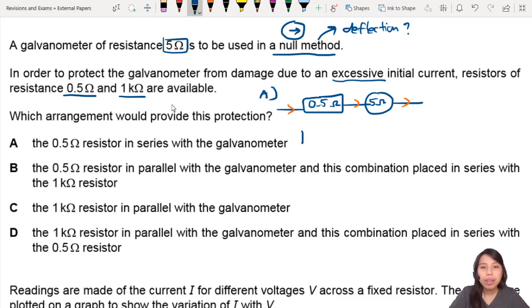Let's look at B. The 0.5Ω resistor in parallel with the galvanometer, and this combination placed in series with the 1kΩ. So if I draw that out, you'll have a series 1kΩ, and the 0.5Ω is going to be in parallel. Yeah, I think that looks like it.